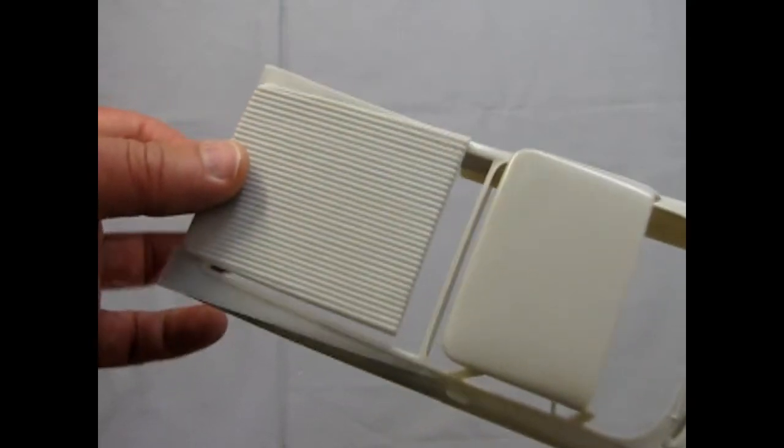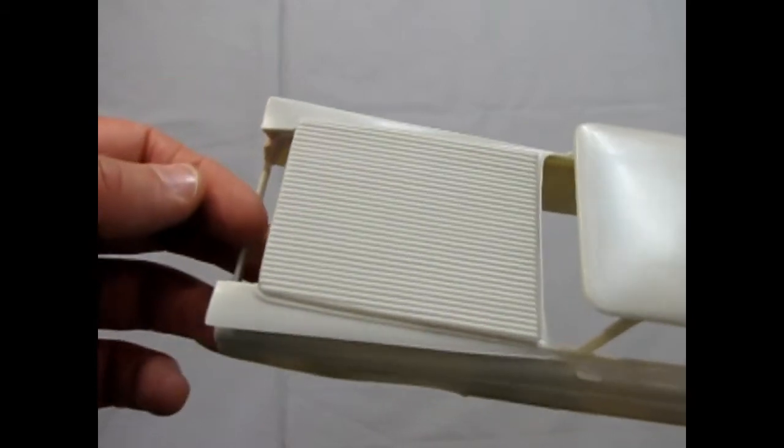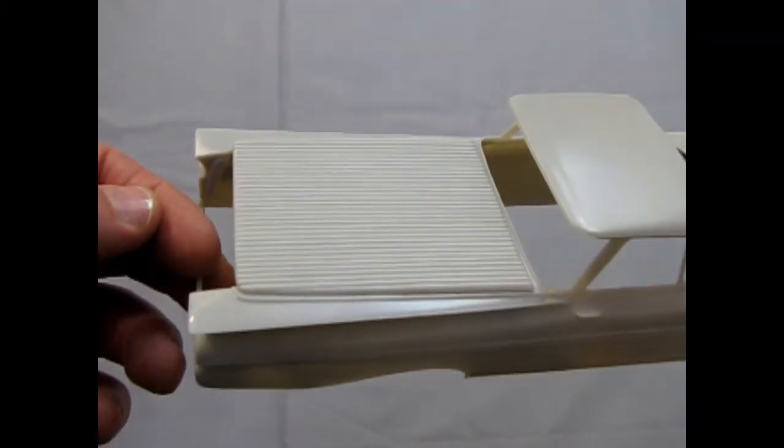Oh, here's a tonneau cover. It goes over top of the pickup bed, keeps all your stuff in there. Of course it's done in that tuck and roll pleated pattern which is pretty cool. Nice crisp detail on it.